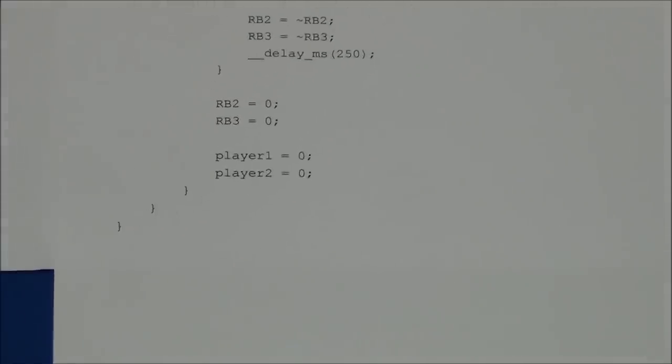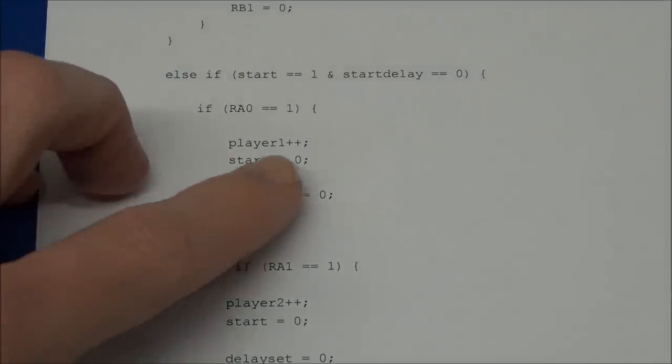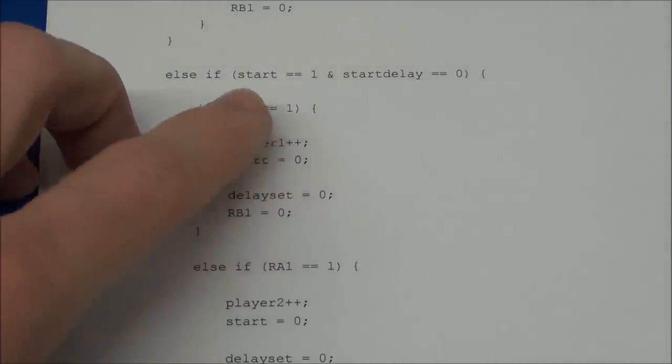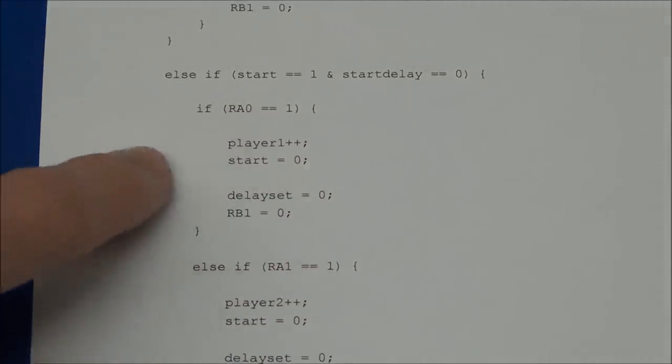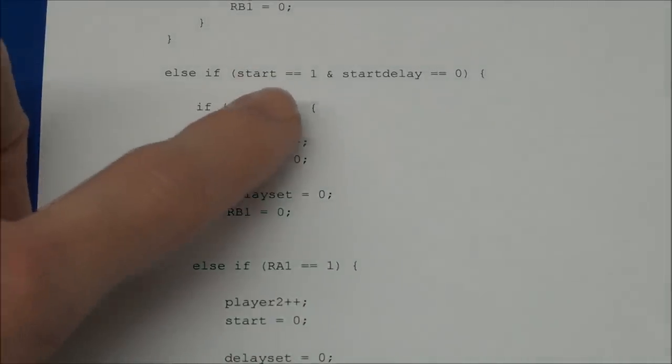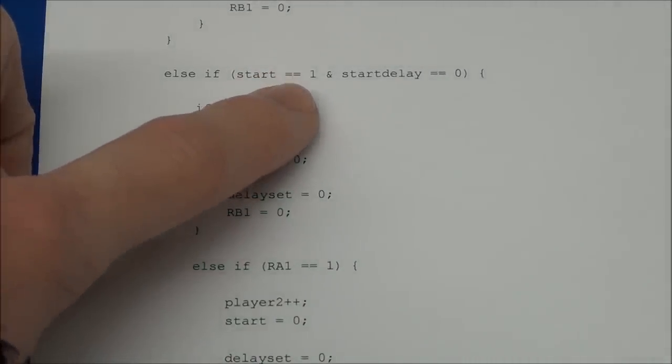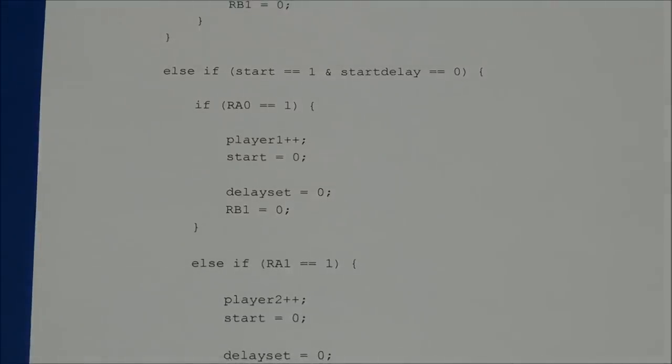And that's it. That's the end of the code. And I can't remember if I mentioned this, but every time a player gets a point the start is set to 0. So you will have to press the start button every time a point is given, no matter if it's a point to the opposite player because of cheating or if it is a valid point given to the player that is the first to press.